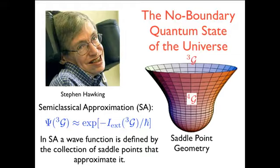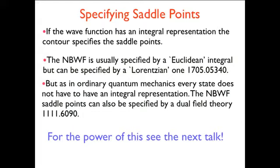So if the wave function has an integral representation, like we originally posited for the no-boundary wave function, it's the contour of integration that specifies the saddle points, by which saddle points the contour can be deformed to pass through. The no-boundary wave function is usually specified by a Euclidean, in quotation marks, integral, by analogy with non-relativistic quantum mechanics ground states. But it doesn't have to be specified this way. In a recent paper, Thomas and his students, maybe just a tiny bit by me, showed that it can also be specified by a Lorentzian one.